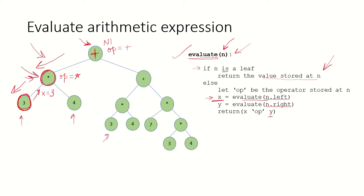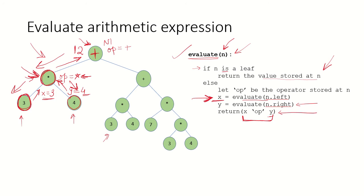When we come back to the multiplication node, we execute the next statement: evaluate the right subtree. We go to the right subtree node, which is also a leaf node, and it returns a value received in y, so y equals 4. Now for this node, we perform the operation x multiplied by y and return that value. Since the operator is multiplication and x=3 and y=4, 3 times 4 gives us 12, which is returned to the calling node and received in x.